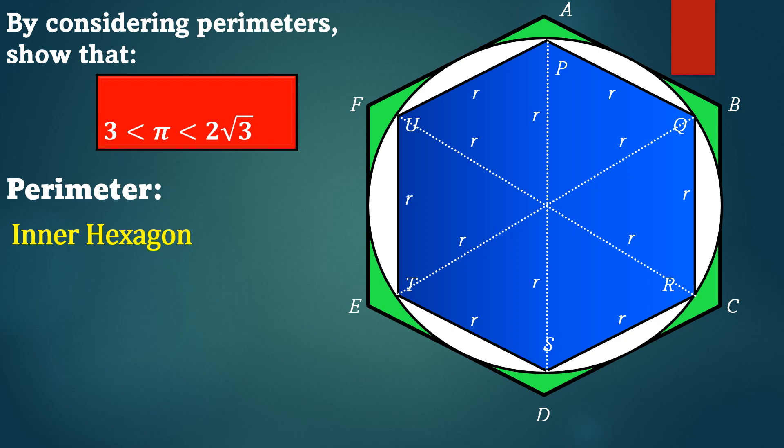Hence, the perimeter of the inscribed, the inner regular hexagon is 6r. Next, the perimeter or the circumference of the circle is equal to 2πr.